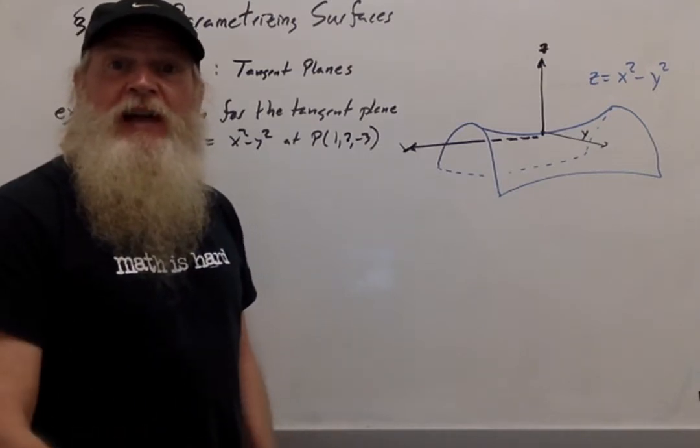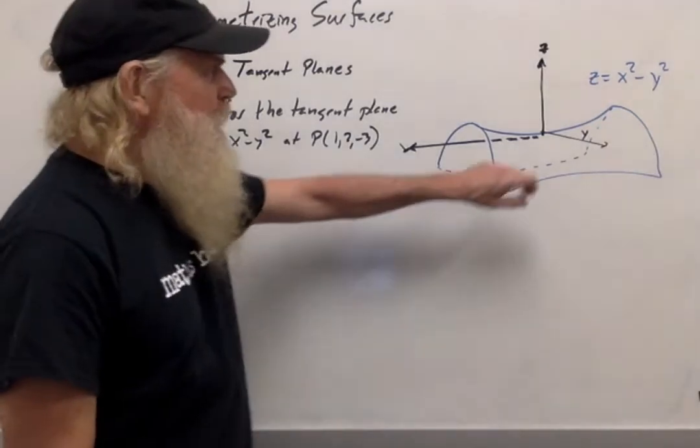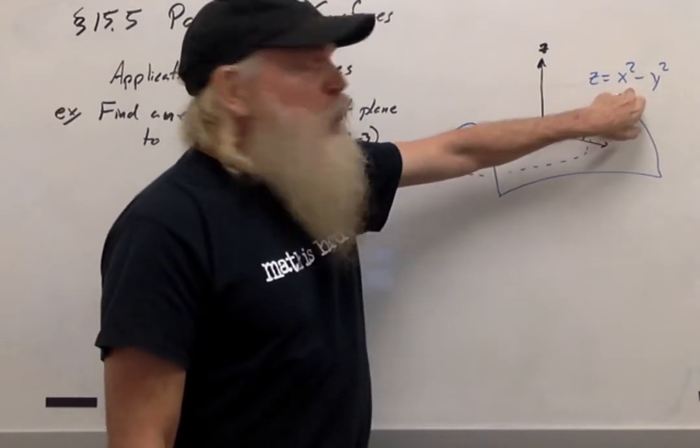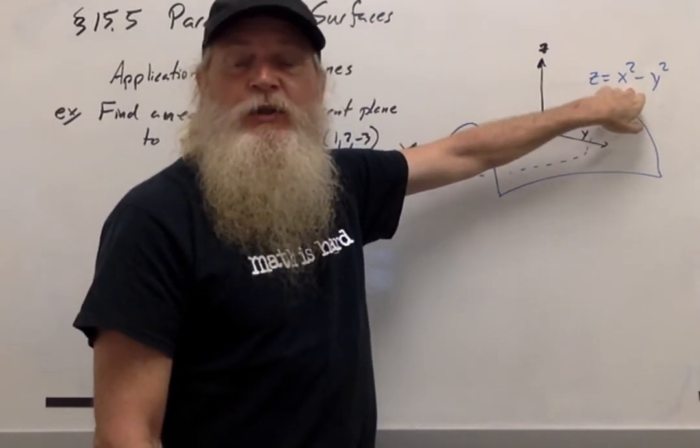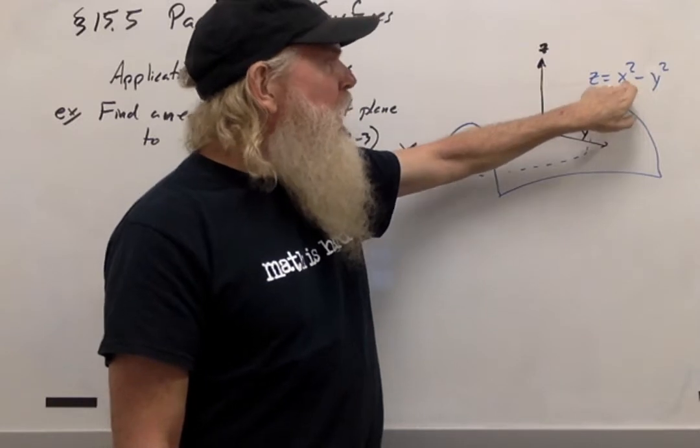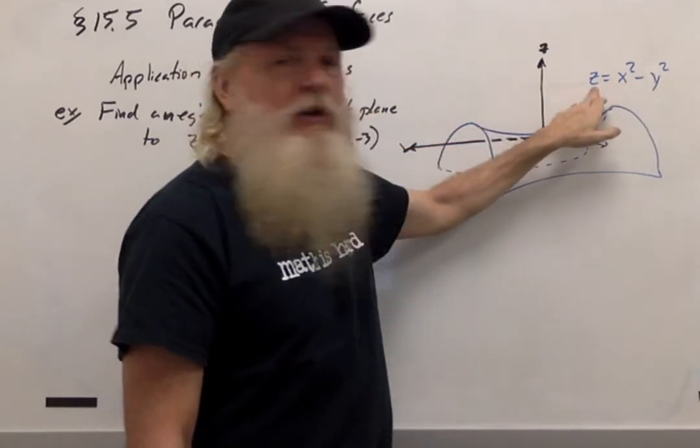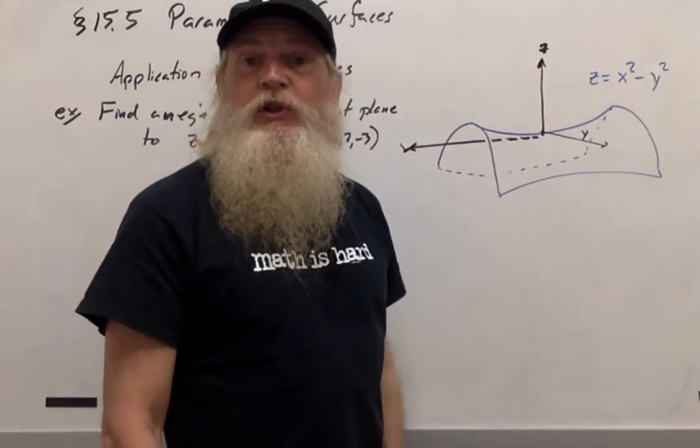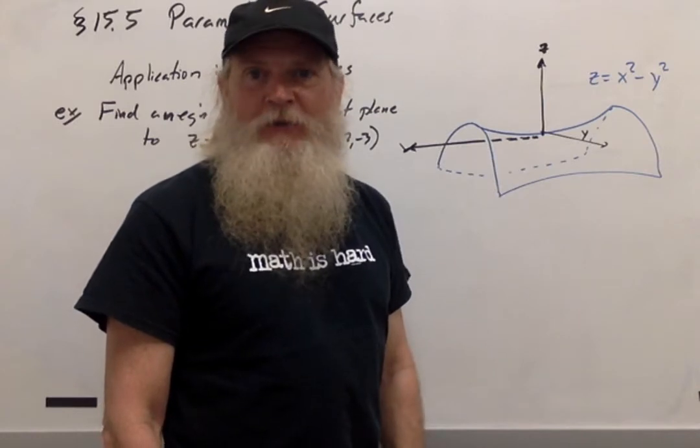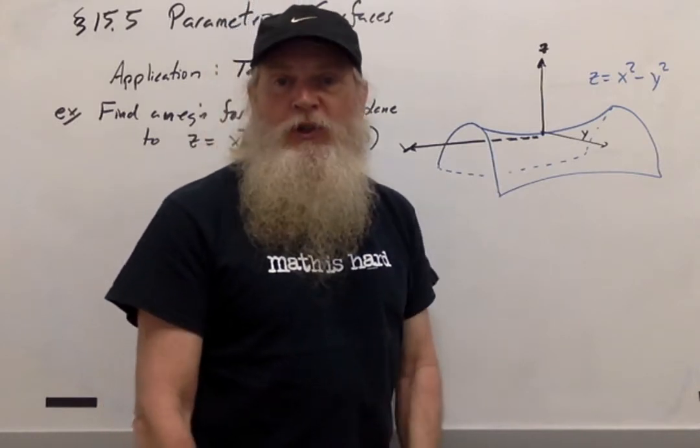I want to remind you that we already have an excellent way to find an equation for the tangent plane. We would rewrite the equation so that this was the level surface of x squared minus y squared minus z. And then we would use the gradient to find a normal vector. And in fact, that's the most efficient way to do that.